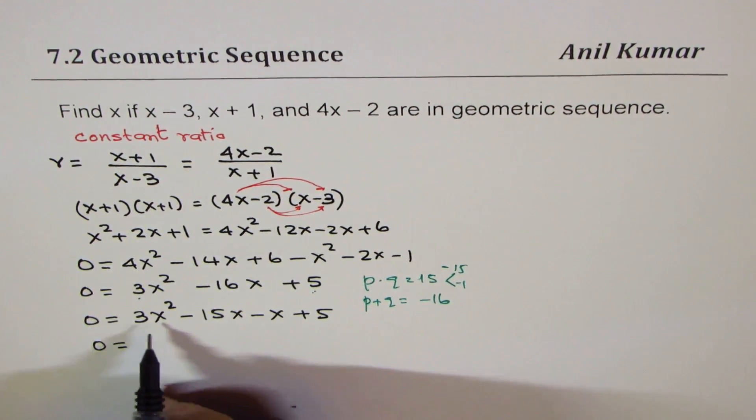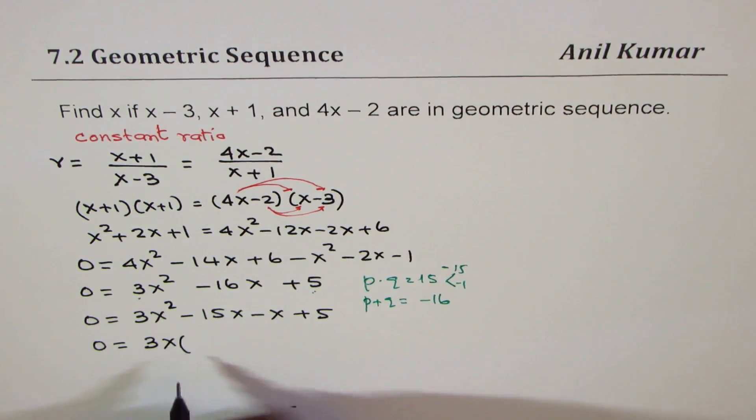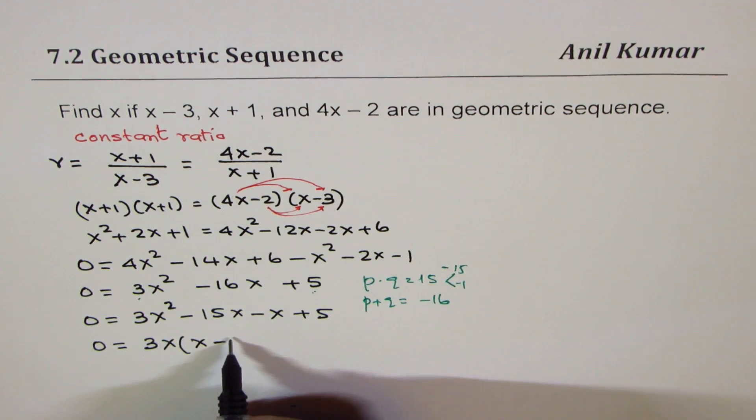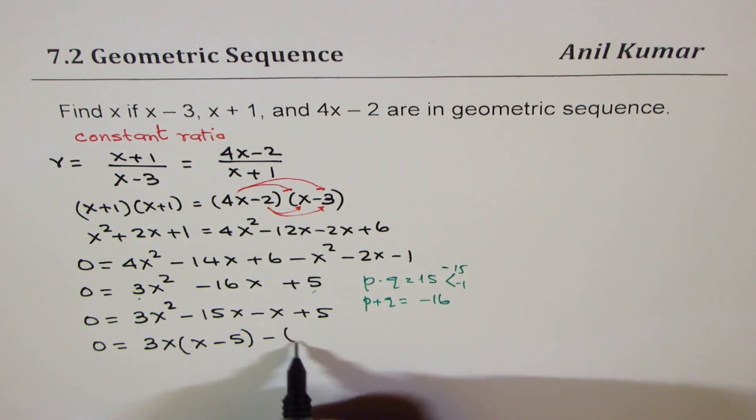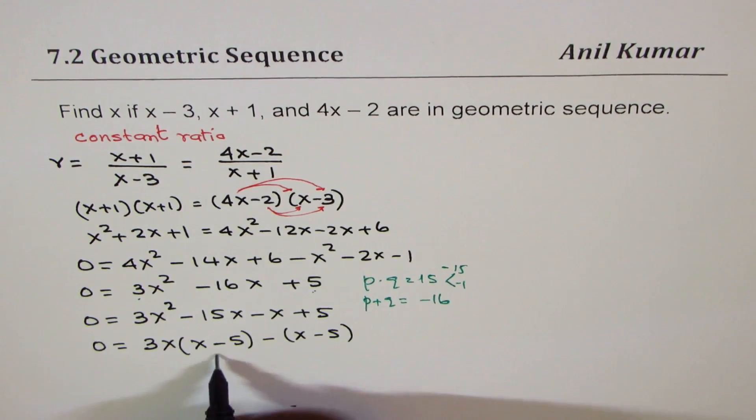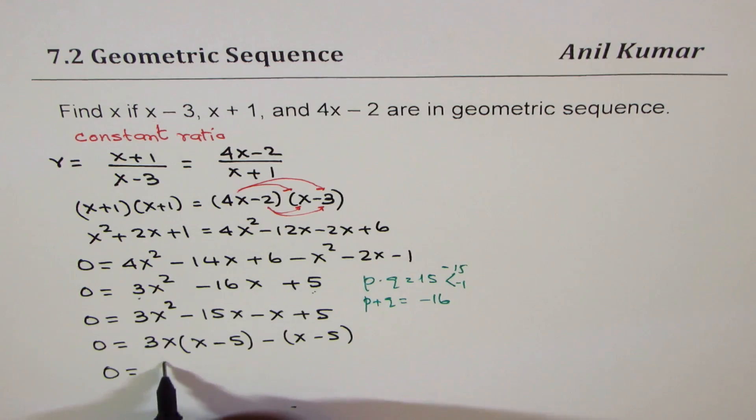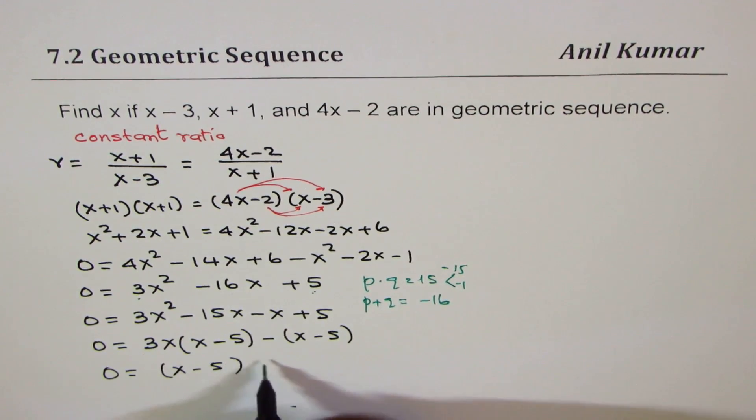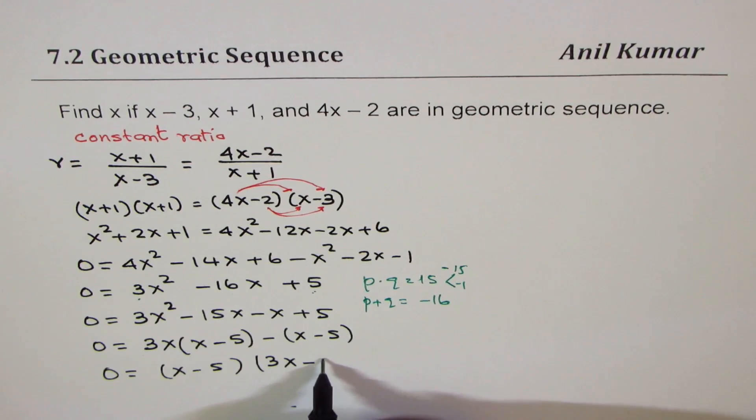That gives us 0 = 3x(x - 5) - 1(x - 5). Factoring out the common term: 0 = (x - 5)(3x - 1).